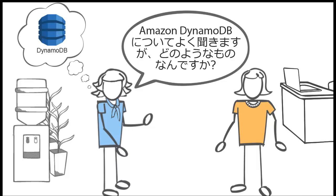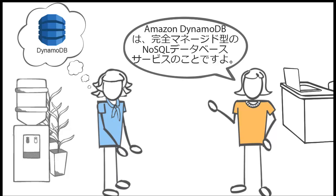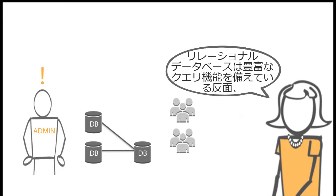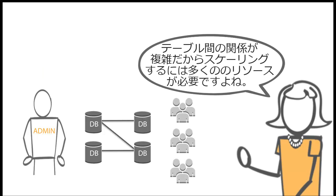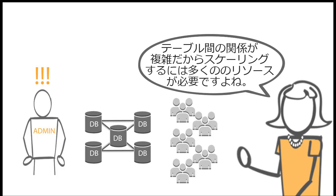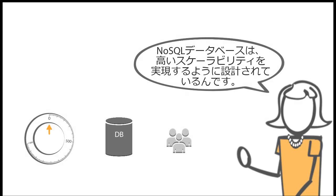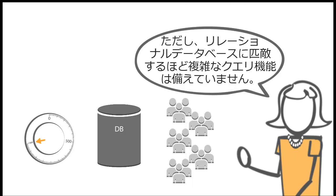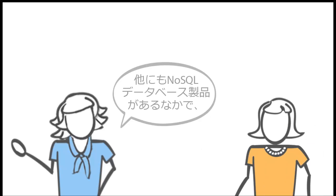I've been hearing about Amazon DynamoDB — do you know what it's all about? Amazon DynamoDB is a fully managed NoSQL database service. What's the difference between a NoSQL database and a relational database? A relational database provides rich query capabilities; however, complex relationships between tables make scaling more resource intensive. NoSQL databases are designed for high scalability, but they do not provide as much complex query capability as relational databases.